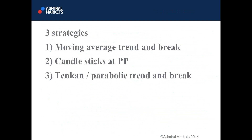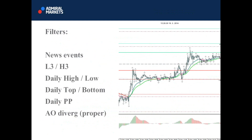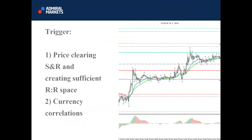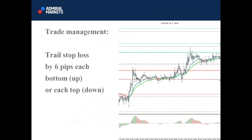The first strategy: basically looking for the hourly to be aligned and in the same direction, and a 50-minute as well. Preferably both, although you don't necessarily need both — the 50-minute could be enough. But if they are both pointed in the same direction and aligned, those moving averages give you a lot of momentum. Filters you might want to think of: news events, daily highs and lows, pivot points, divergence. Triggers: basically price going through support and resistance. Entry could be the break of the fractal, the retest after the break, or the bounce after the pullback. Trade management: loose trade management could use bottoms and tops, or if you want a tighter one, you could use moving averages.